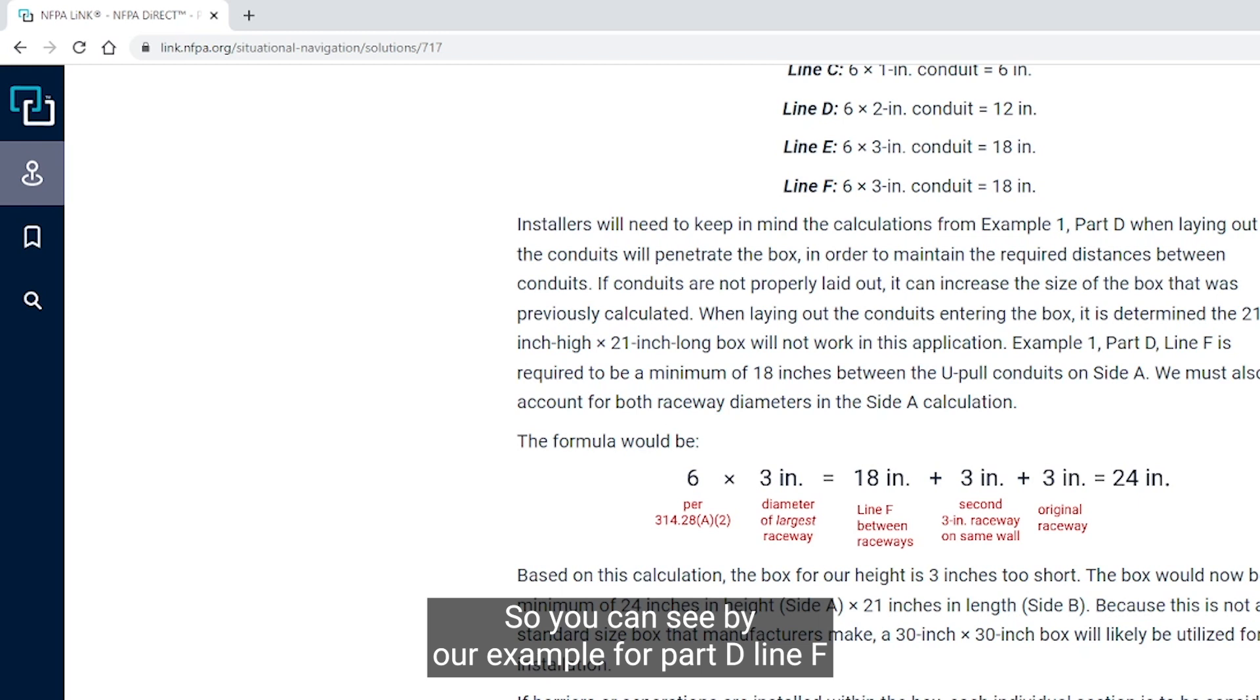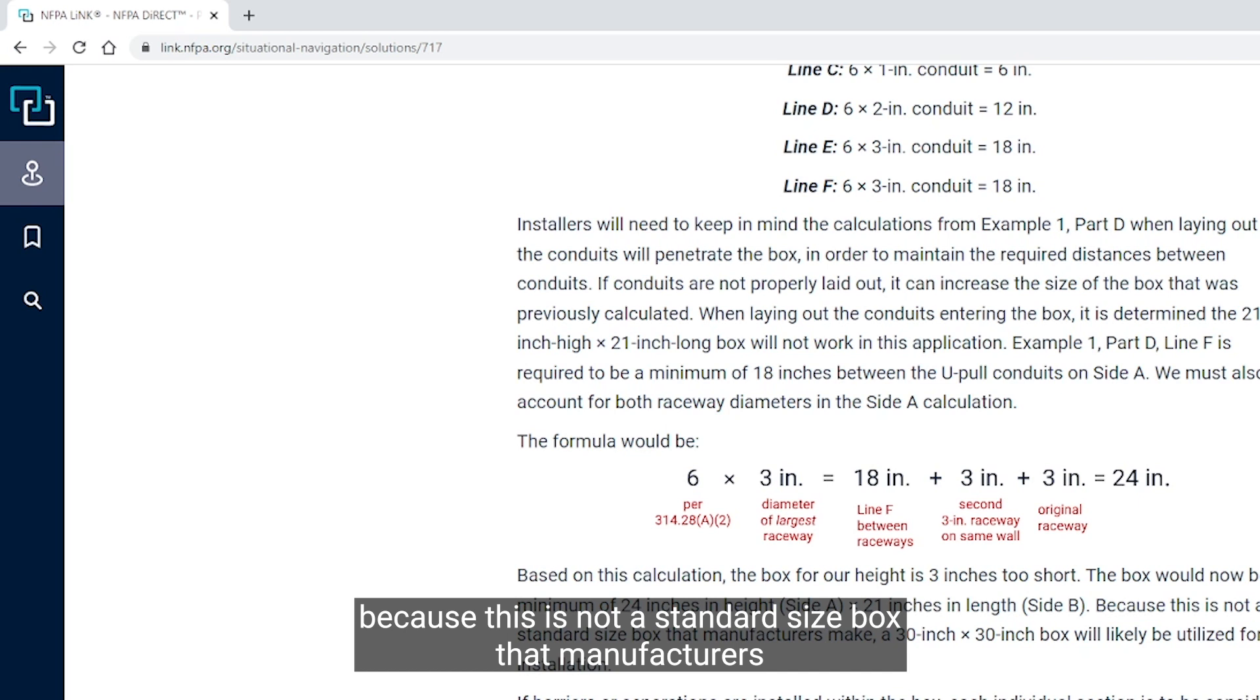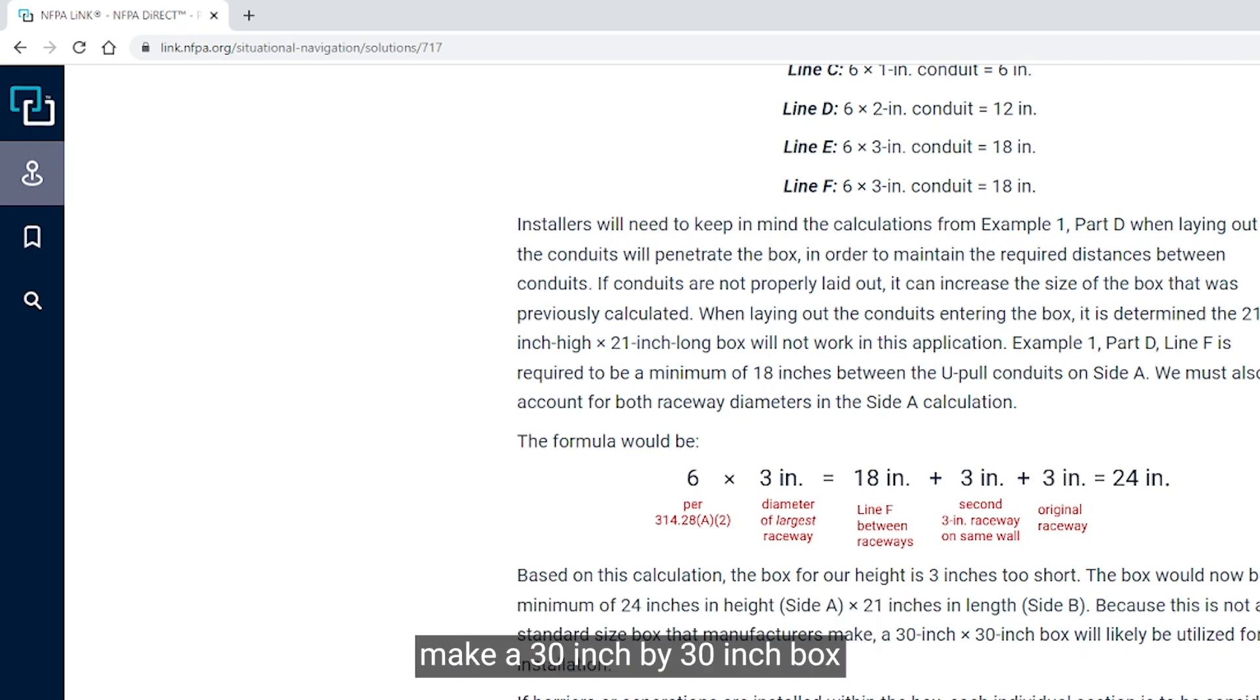So you can see by our example for Part D, line F, the 21 by 21 inch box will not work. You will see that it's 3 inches too short. So this box would now need to be a minimum of 24 inches on side A and 21 inches minimally on side B. Because this is not a standard size box that manufacturers make, a 30-inch by 30-inch box will likely be used for this installation.